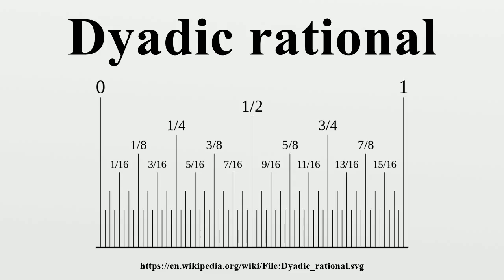It is called the dyadic solenoid and is an example of a solenoid group. The dyadic rationals are the direct limit of infinite cyclic subgroups of the rational numbers, and the dual group can be constructed as the inverse limit of the unit circle group under the repeated squaring map. An element of the dyadic solenoid can be represented as an infinite sequence of complex numbers q0, q1, q2, with the properties that each qi lies on the unit circle and that, for all i greater than 0, qi squared equals qi minus 1.